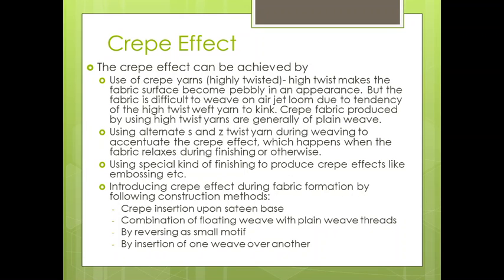Because of the kinking tendency, it creates a problem in the shedding during fabric formation. So generally these crepe fabrics are not produced on air jet looms. The crepe fabric produced using high-twist yarn is generally of plain weave, though twill or satin can also be used. For high-twisted yarn, we prefer crepe fabric made of plain weave.